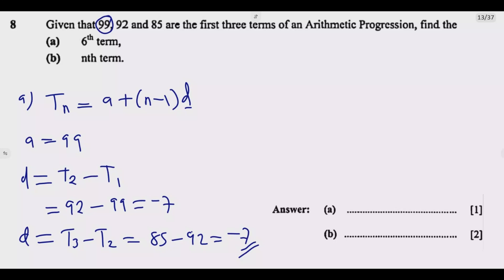I'm looking for the sixth term, so in this case my n equals 6. To answer part (a), T6 equals 99 plus (6 minus 1) times the difference, which is negative 7.